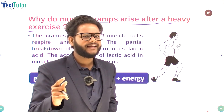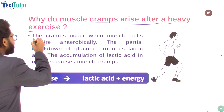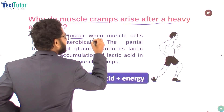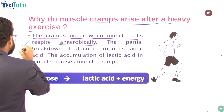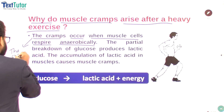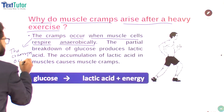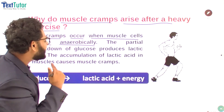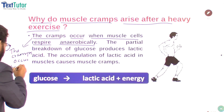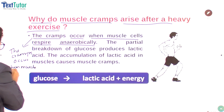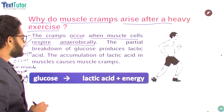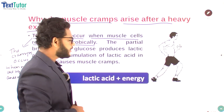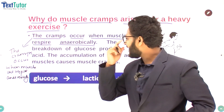Muscle cramps occur when muscle cells respire anaerobically. The cramps occur when muscle cells respire anaerobically — in the absence of oxygen.